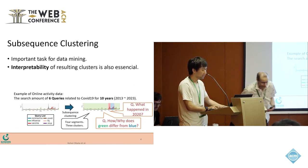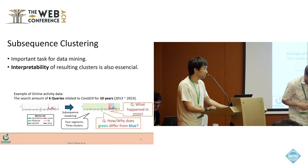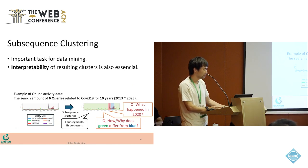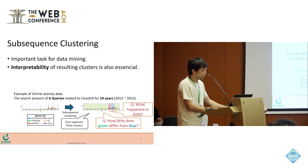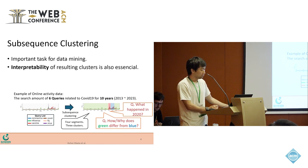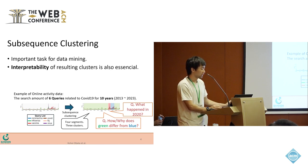As well as discovering clusters, the interpretability of the resulting cluster is also essential, since we don't know what each cluster refers to. For example, let's say we have a multivariate time series for simplicity and we obtain four segments and three clusters after subsequence clustering.